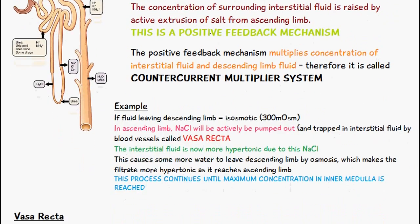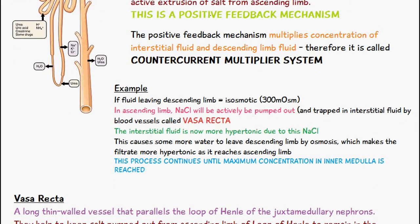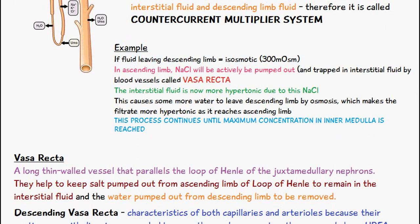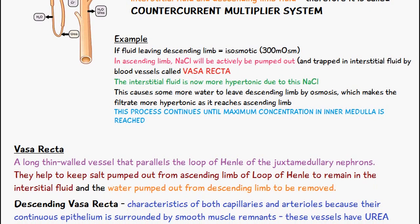Now let's talk about vasa recta. These are long, thin-walled vessels that parallel the loop of Henle of the juxtamedullary nephrons. They help to keep the salt pumped out from the ascending limb of the loop of Henle within the interstitial fluid, and to remove the water that's pumped out of the descending limb.